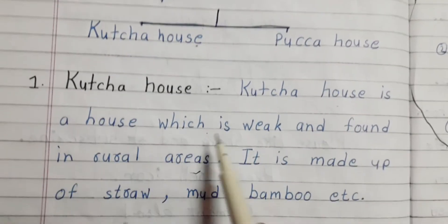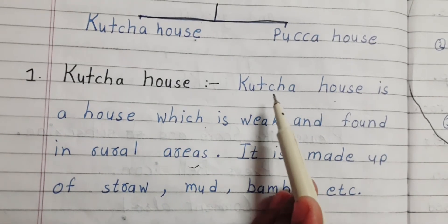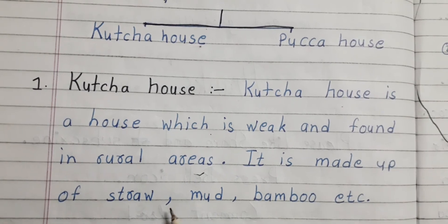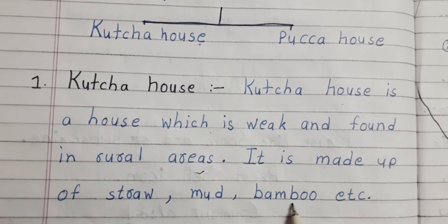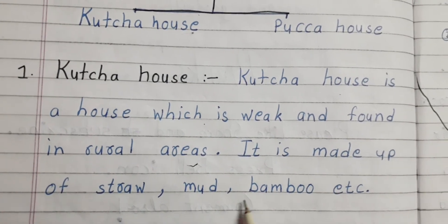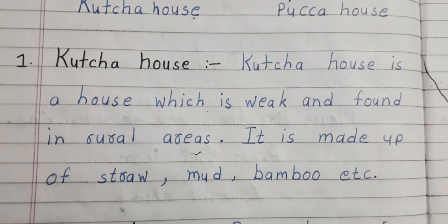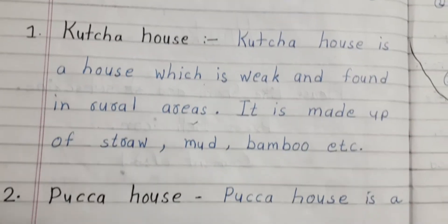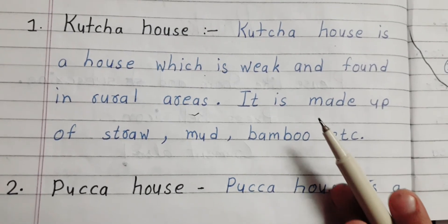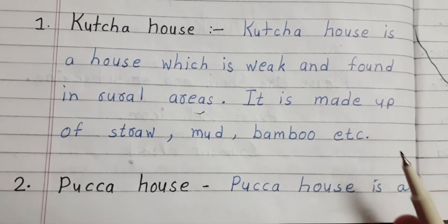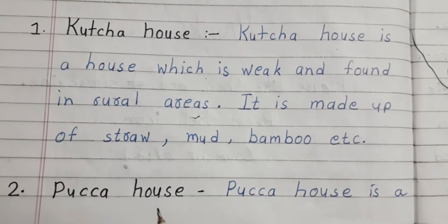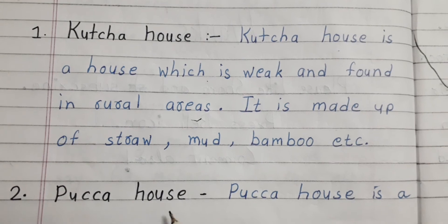Let's see the definition of kacha house. A kacha house is a house which is weak and found in rural areas. It is made up of straw, mud, bamboo, etc. Some examples of kacha houses are tents, huts, etc.